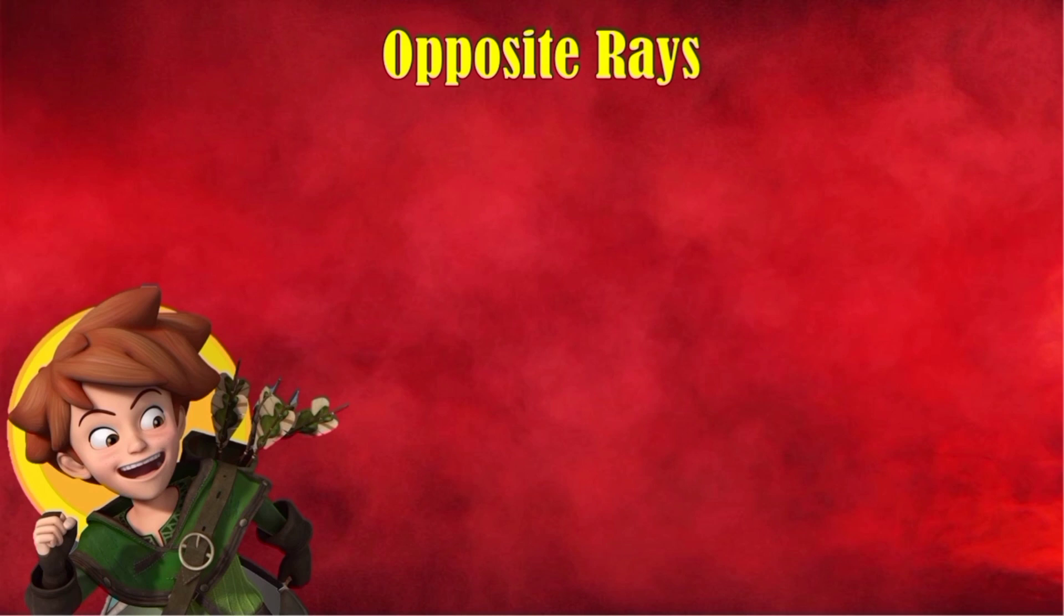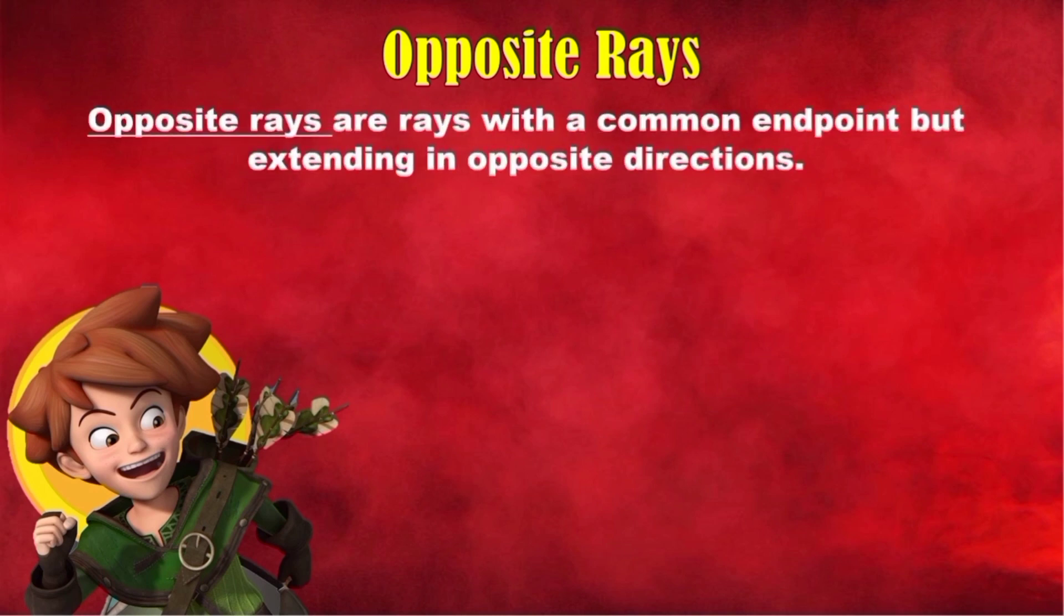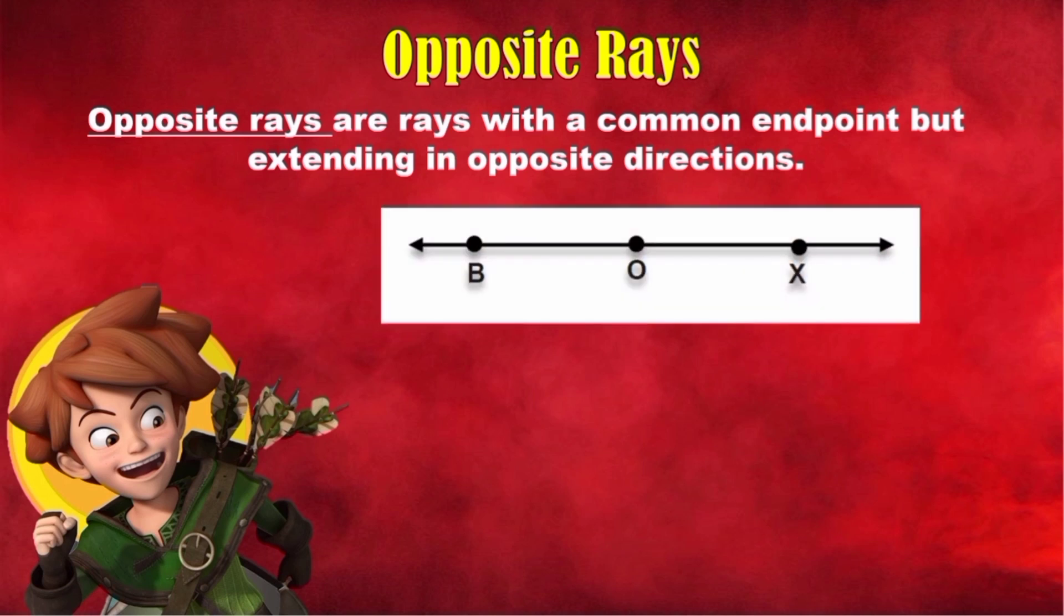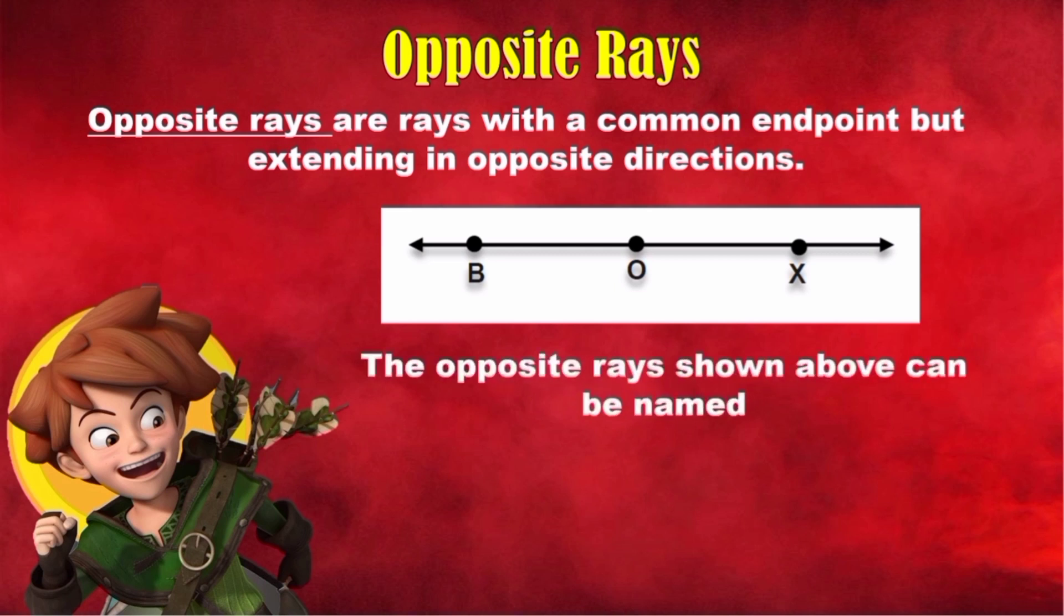Opposite Rays. Opposite Rays are rays with a common endpoint but extending in opposite directions. Now, look at our illustration. I have here line BX. Let's identify the opposite rays. The opposite rays shown above can be named ray OB and ray OX.